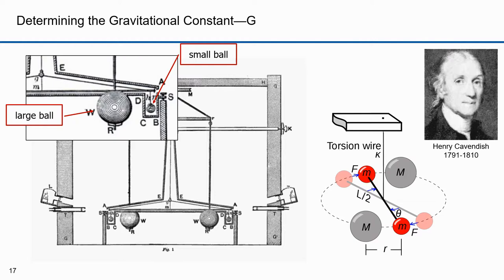Cavendish expressed his result in terms of the density of the earth — he referred to his experiment in correspondence as 'weighing the world.' Cavendish's value for the earth's density is 5.448 grams per centimeter cubed, giving a value of G equal to 6.74 × 10⁻¹¹ meters cubed over kilograms second squared, which differs by only one percent from the currently accepted value of 6.67428 × 10⁻¹¹. Physicists generally credit Cavendish with the first measurement of the gravitational constant.